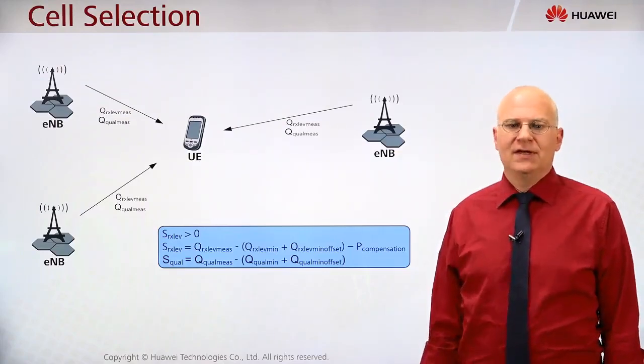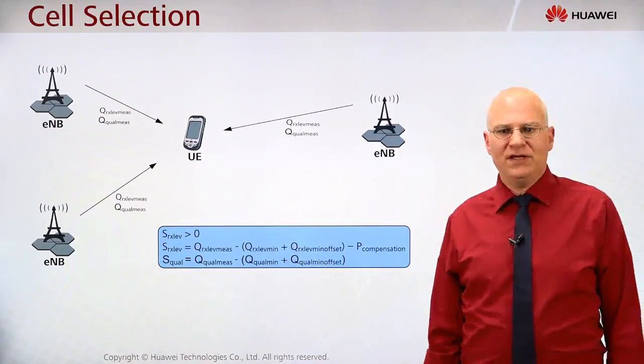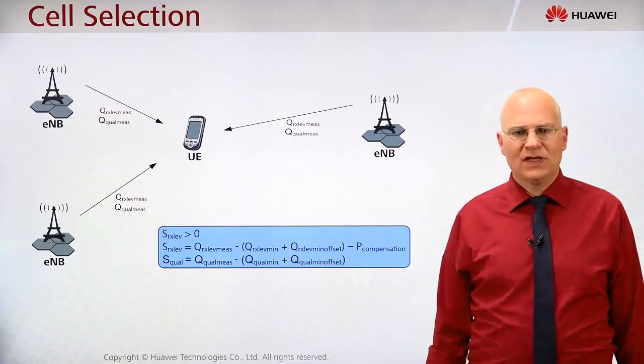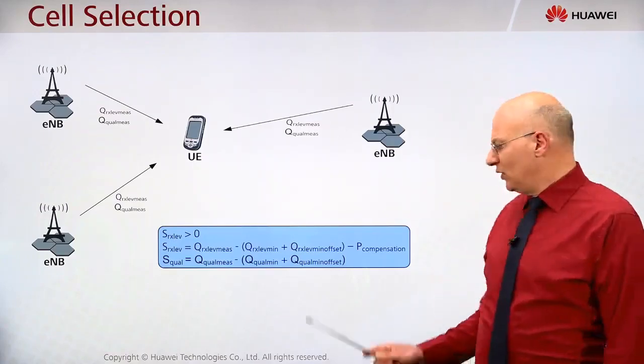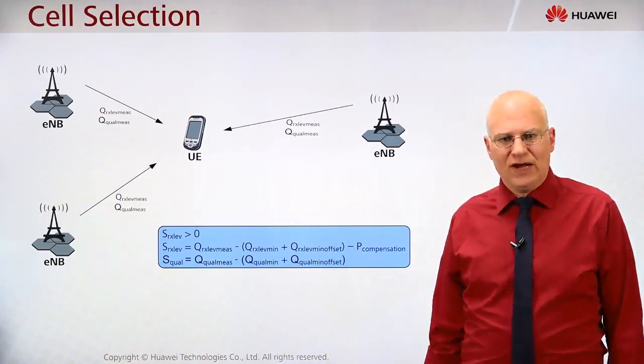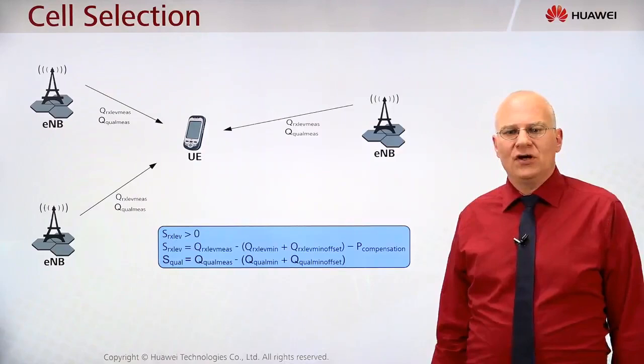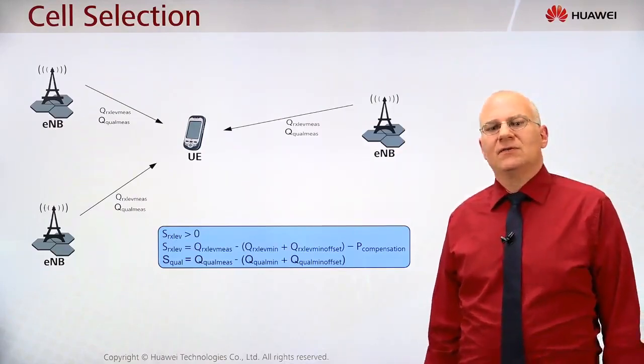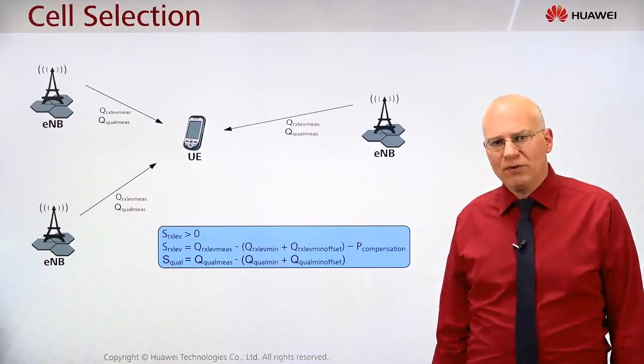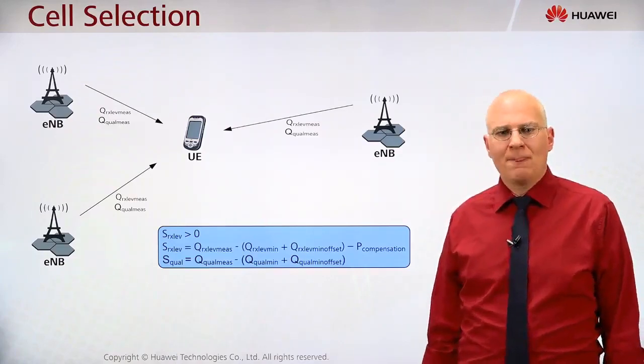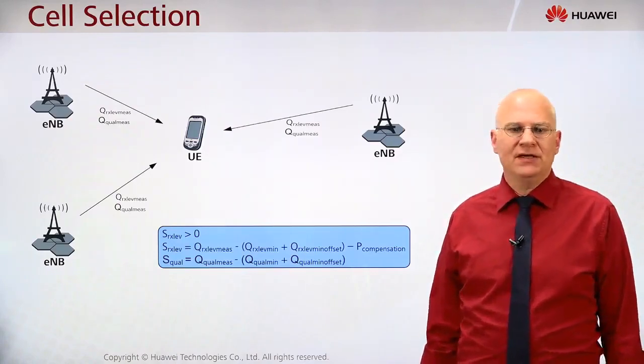Then this network will be prioritized by this factor. And then we have a power compensation factor which is seldomly relevant. This is only relevant for low power class user equipment. This means we have now only one power class, 23 dBm maximum power, so there is no power compensation.